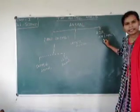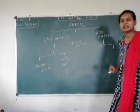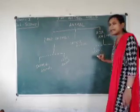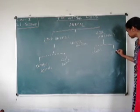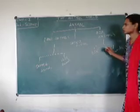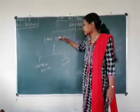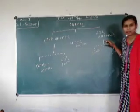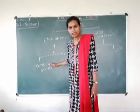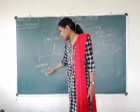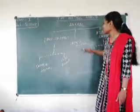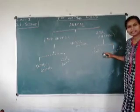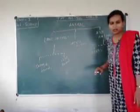Air animals are also further divided into birds and insects. So, to summarize: animals according to their places are land animals, water animals, and air animals. Land animals are divided into domestic and wild animals. Air animals are divided into birds and insects.